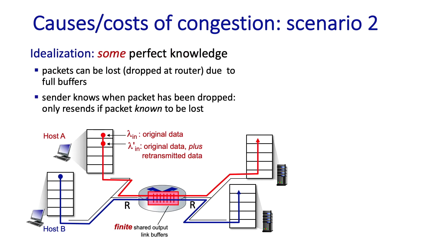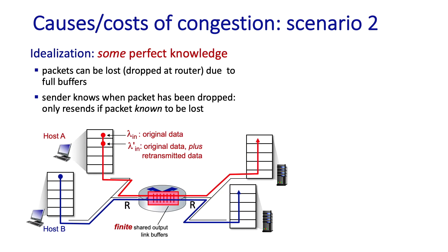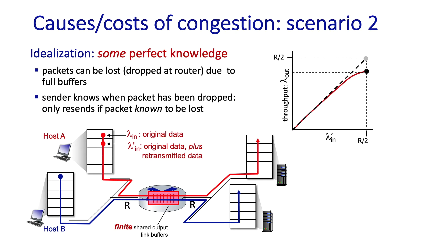Now let's relax the assumption that the sender magically knows when there's free buffer space, and consider what happens when packets can be lost at the router when buffers are full. A lost packet is retransmitted by the sender and eventually finds free buffer space and is delivered. When retransmissions occur because of known loss, at a low arrival rate buffers are almost always available and every originally transmitted packet makes it through. So the arrival rate including retransmissions essentially equals the receiver throughput, and the slope of this curve is close to 1.